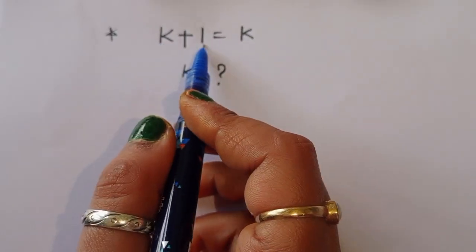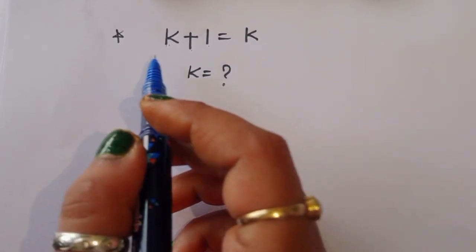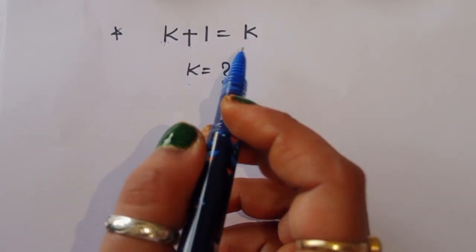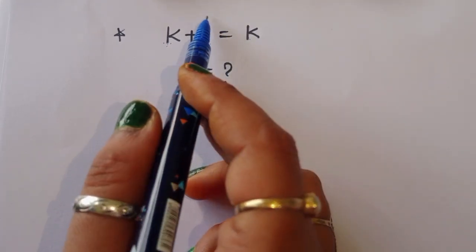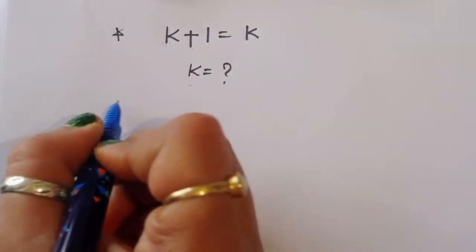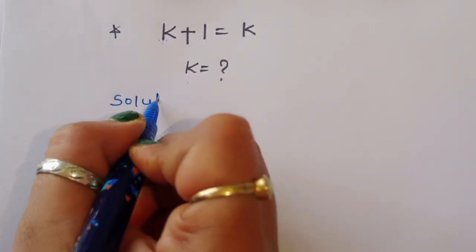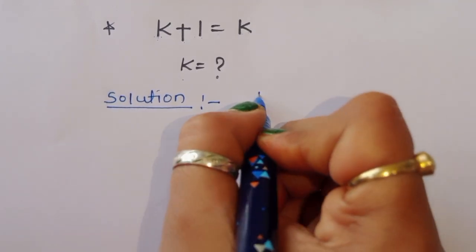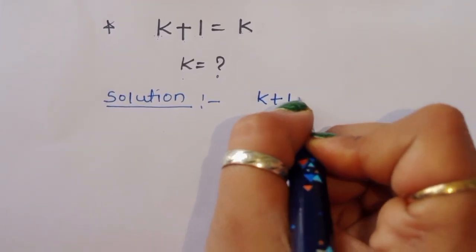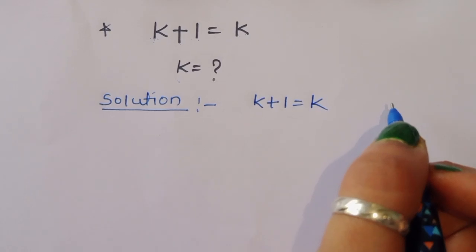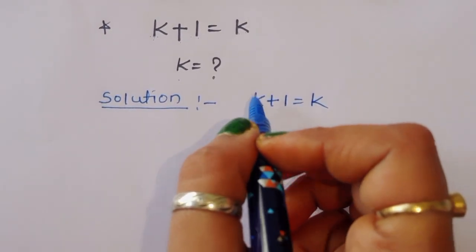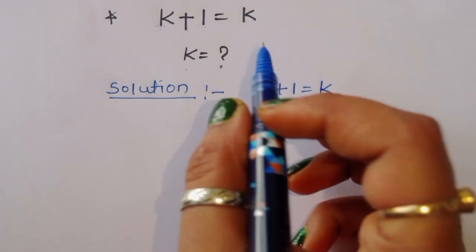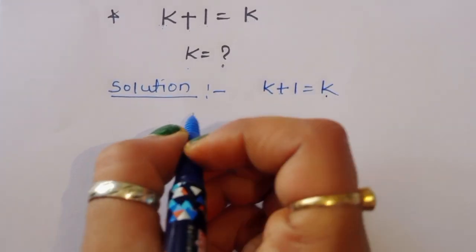The question is: given √(k+1) = √k, we have to find out the value of k. Let's see the solution, because here √(k+1) is equal to √k. Whatever the value of k, that plus 1 equals k again. Now, how we can solve this question, let's see.